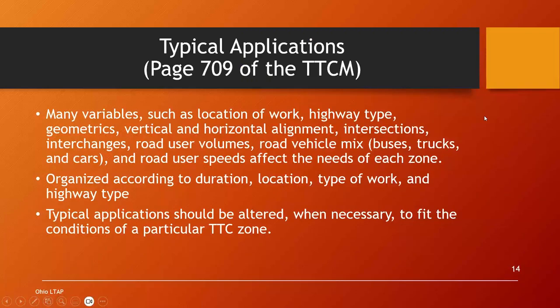Let's talk about the typical applications inside the Temporary Traffic Control Manual — there are 46 of them. The reason there are so many is because every roadway is so different. There are many variables: the location of where you're working within the right-of-way — you might be off the shoulder mowing, on the shoulder, in a lane, in two lanes, or closing the whole street. There are also different highway types: two-lane roads, multi-lane roadways, local roads, freeways, and expressways.